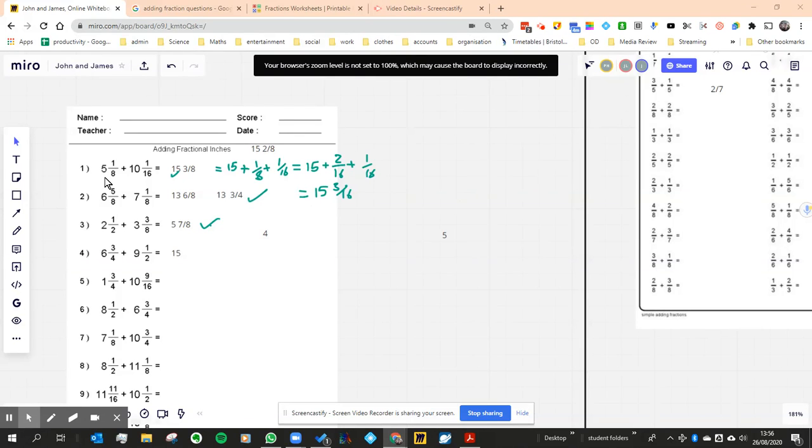The reason why this one's a little bit harder is because not only do we have different denominators in most cases, but we also have mixed fractions. So generally speaking, the trick is to add the whole numbers first, then add the fractions next to it afterwards.